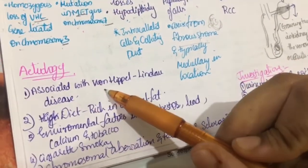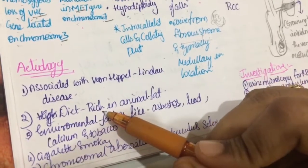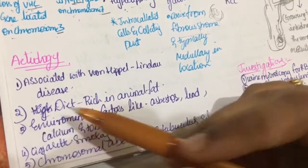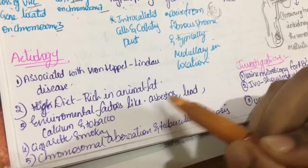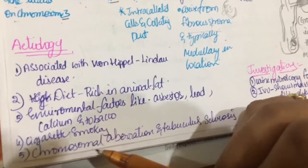Etiology. It is associated with von Hippel-Lindau disease, diet rich in family, animal fat, environmental factors like asbestosis, lead, calcium, tobacco, cigarette smoking, chromosomal abrasions and tubular sclerosis.